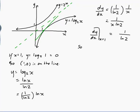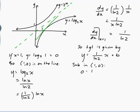So the tangent is given by y equals 1 over ln 2 times x plus b. Now if I substitute in the point one zero I get 0 equals 1 over ln 2 times 1 plus b. So b is equal to minus 1 over ln 2.